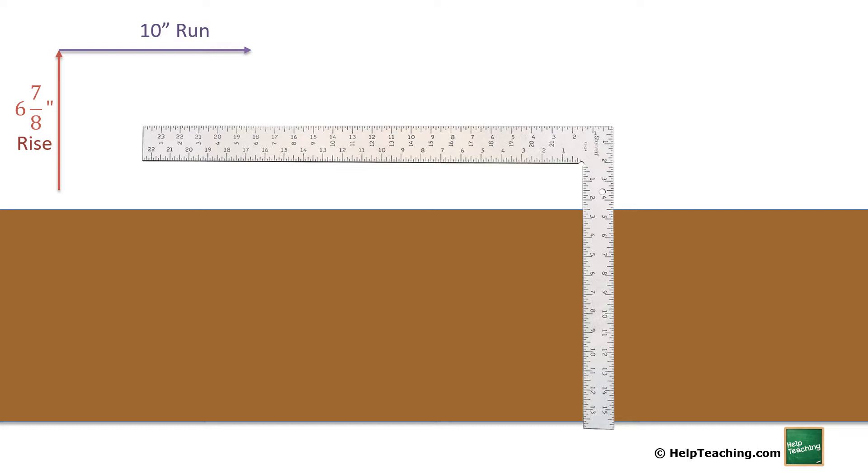So we're going to take a carpenter's square. These are very standard. And we are going to mark 6 and 7 eighths on one side of the square and 10 on the other side. Sometimes there's little gadgets you can use that attach there or you could just make a little mark on it. However you want to do it so that you know where you're at.